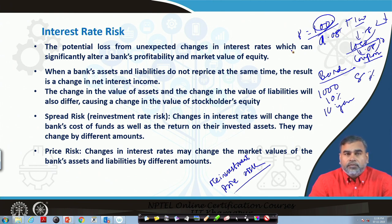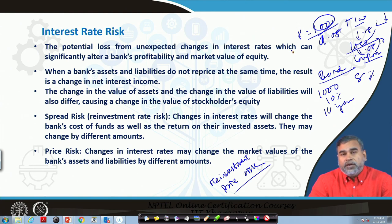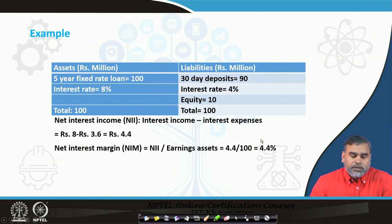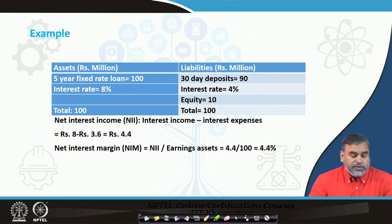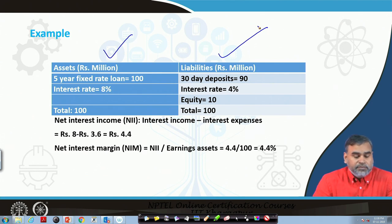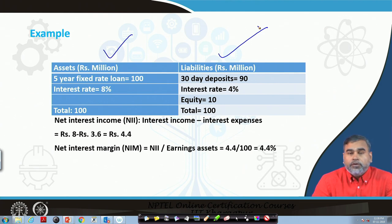Changes in interest rates may change the market value of the bank's assets and liabilities by different amounts. Consider a simple balance sheet of a commercial bank: on the asset side, the bank has a single fixed rate loan for 5 years, 100 million. On the liability side, they have 30-day deposits of 90 million at 4 percent interest rate and equity of 10 million, totaling 100 million. The loan is at 8 percent. So assets equal liabilities.